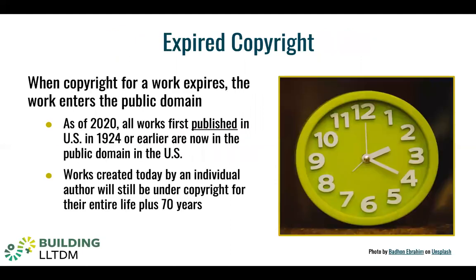So how do things get in the public domain and become free of copyright protection? One way is through copyright expiration. When we talked about duration of copyright, we learned that copyright protects works for a limited time. After that, copyright expires and the works fall into the public domain and are free to use. Under United States copyright law in 2020, all works first published in the US in 1924 or earlier are now in the public domain due to copyright expiration.